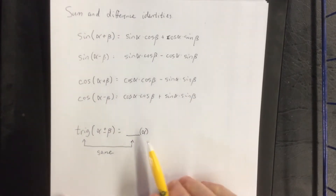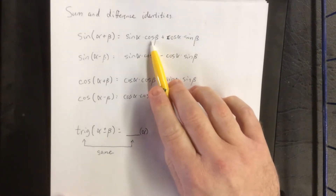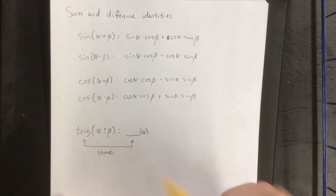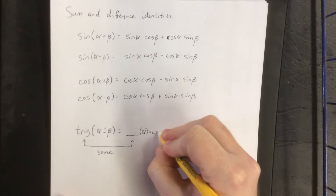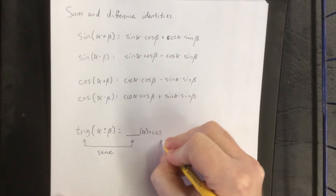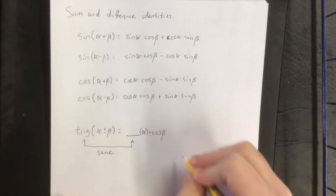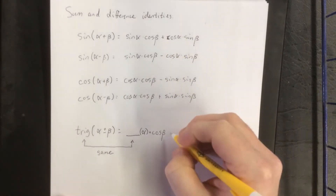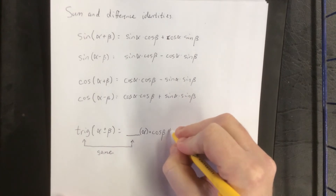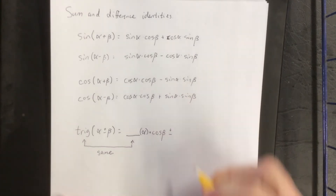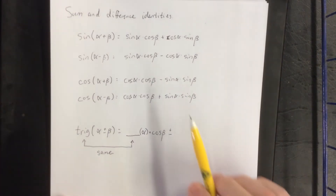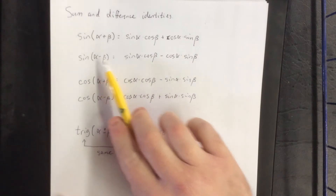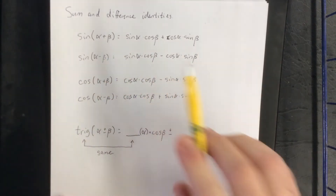The second thing that we write down in all four cases is cosine beta. What comes after that will either be a plus or a minus sign. Now for sine of a sum, we'll see a sum. For sine of a difference, we'll see a difference.